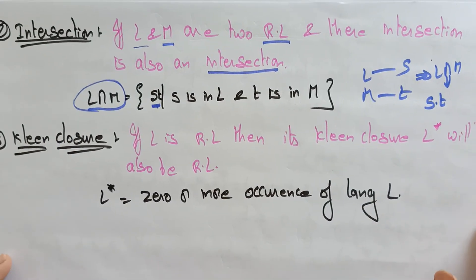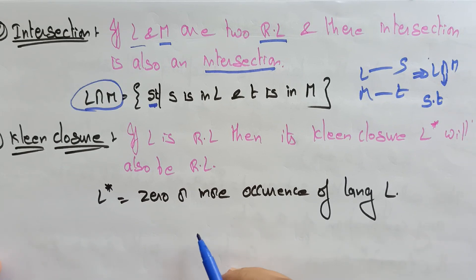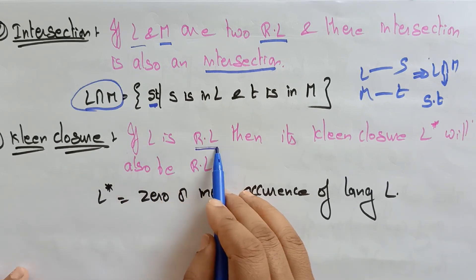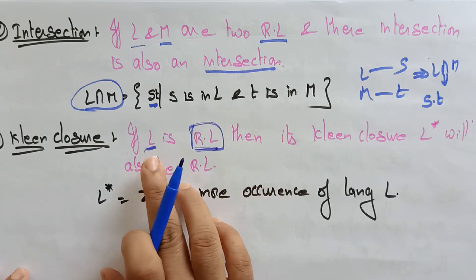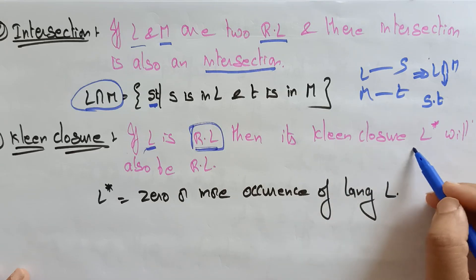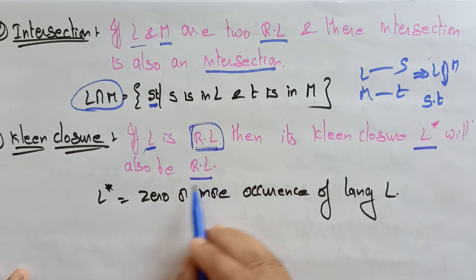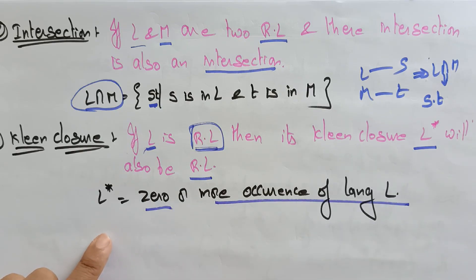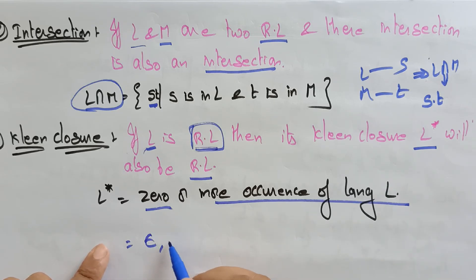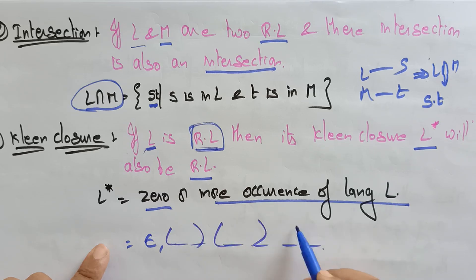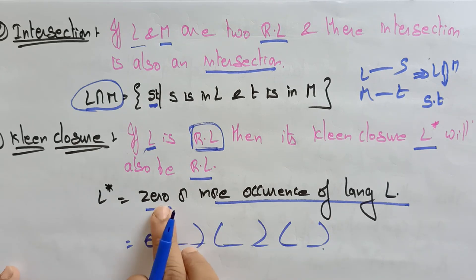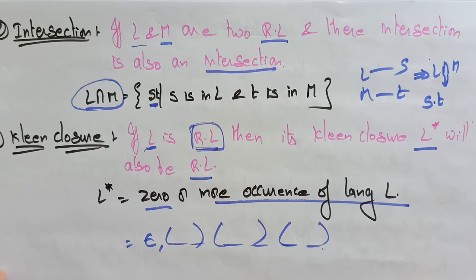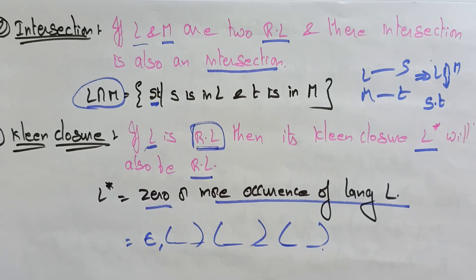Another property is Kleene closure. If L is a regular language, then its Kleene closure L* will also be a regular language. L* is zero or more occurrences of language L. You can form strings like A+B, A·B, A+B* and so on. These are the different properties of regular languages. Thank you.